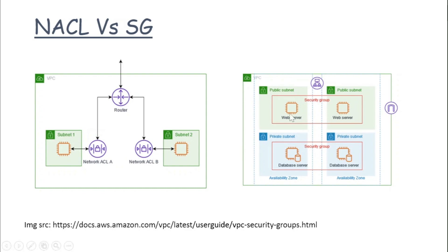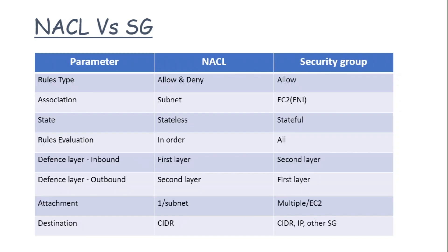Here is a table that shows the differences between NACLs and security groups on certain parameters. The first parameter is rule type: in NACLs we can have both allow and deny rules, so you can explicitly deny inbound traffic to the subnet. But in security groups we can only have allow rules. On the basis of association, NACLs are associated at the subnet level, but security groups can be attached to EC2 or at the ENI level.